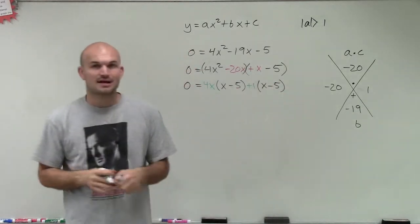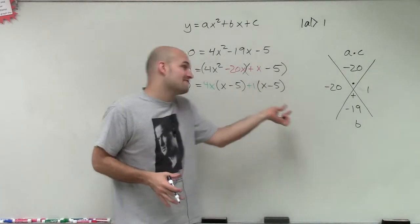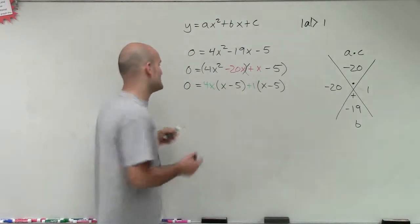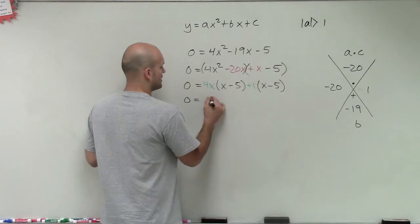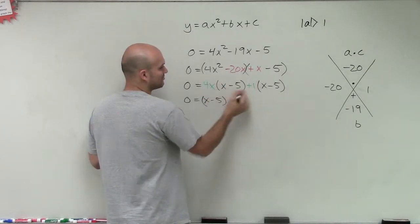Our goal is to have our factors be exactly the same. Because then we're going to factor the x minus 5 out. Therefore, I have 0 equals x minus 5 times our remainder of 4x plus 1.